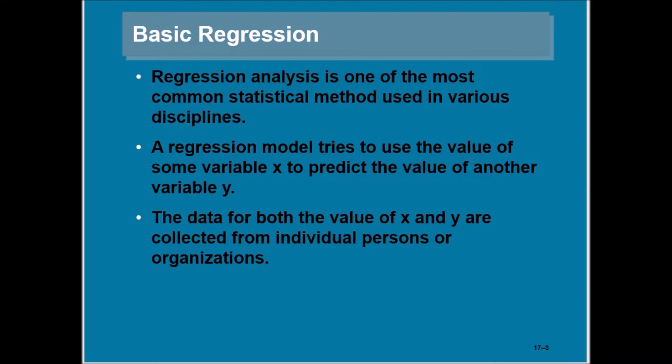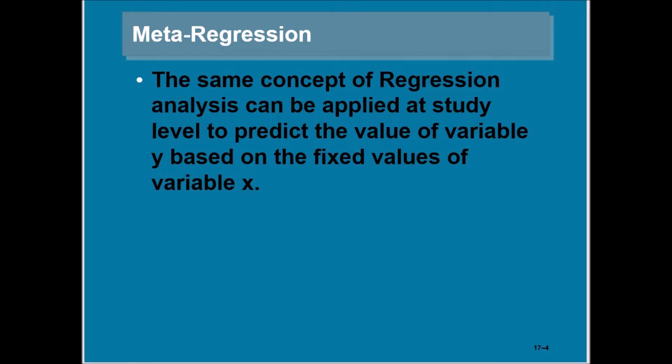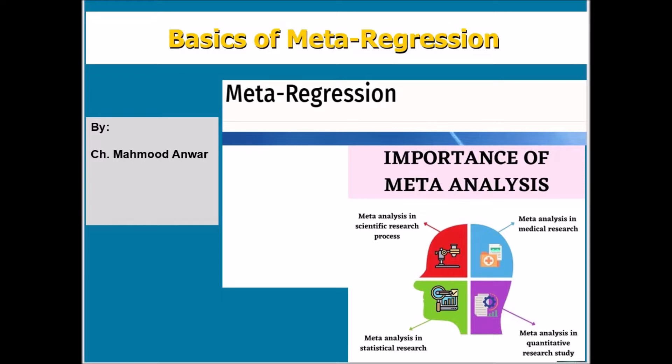The data for both X and Y are collected from individual persons or organizations in survey research studies. We can apply the same concept of regression analysis at study level to predict the values of variable Y based on the fixed values of variable X. This is called meta-regression when we apply the same concept at study level.